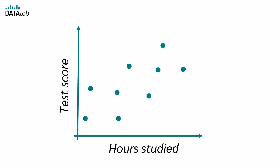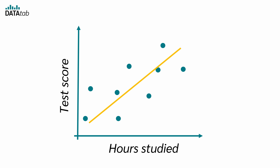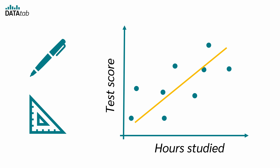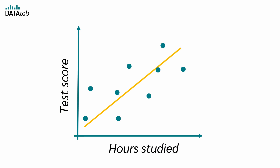We just draw a straight line through the dots. Not a curved line — a straight line. But do we just take a pencil and a ruler and draw a line through the dots? Of course not. There's a smarter way to do it: simple linear regression. Simple linear regression is all about finding the best line that fits your data.